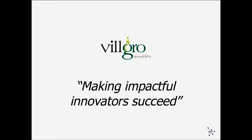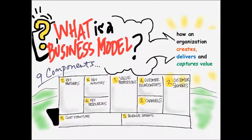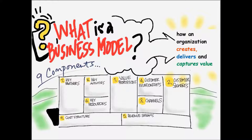Moving to what is a business model: it's really nine components that come together to outline the business. They fully define the business but are also fairly flexible and can fit a lot of different contexts. They define how the organization creates, delivers, and captures value. The numbering is important — we start with the core of the business and build outwards. We prefer the business model canvas over a business plan because we see it as more practical as a living document that you should be revisiting as you learn more.